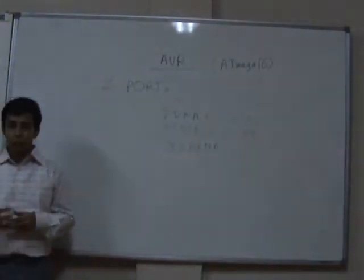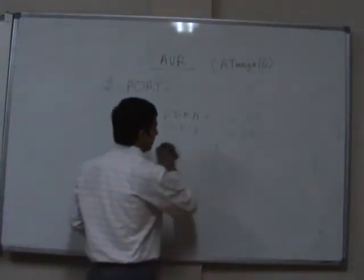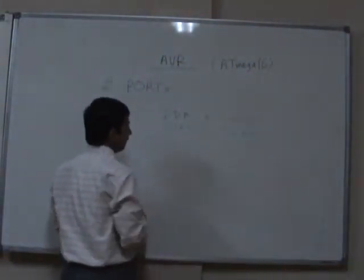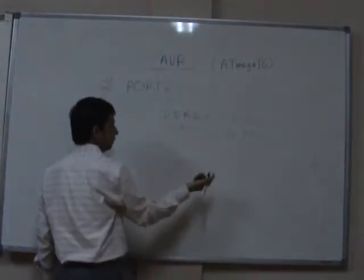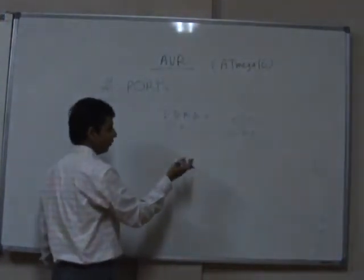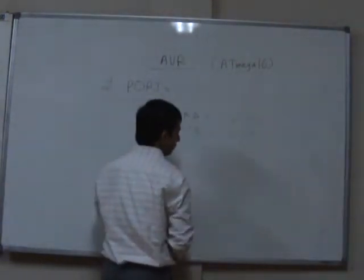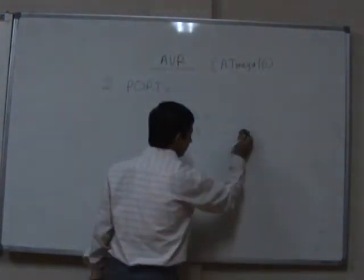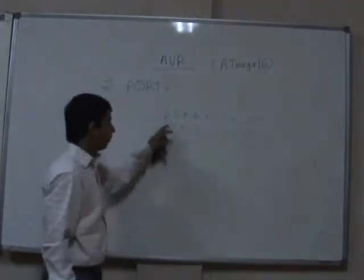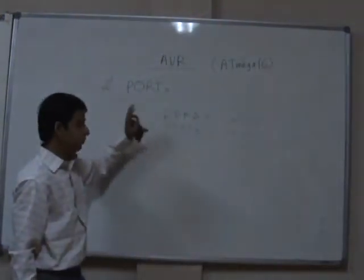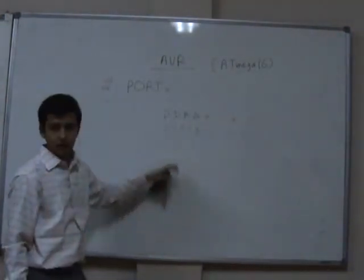Second example: make port B a tri-stated input. Set DDRB = 0x00 to make the entire port B an input. Then set PORTB = 0x00, which makes port B a tri-stated input. After that, you can start reading data from port B.